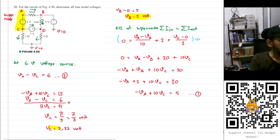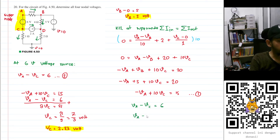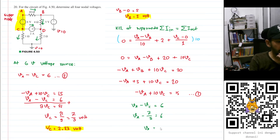Now from VC we can calculate VA. Since VA minus VC equals 6, and VC equals 7/3, we get VA equals 6 plus 7/3, which equals approximately 8.33 volts.